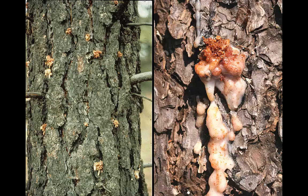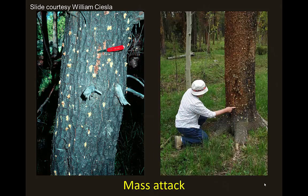Ultimately, enough beetles means the tree loses — the beetles win. Pitch-outs are what we see, and if enough attacks occur they will overcome the tree defenses through this mass attack. You either see a whole lot of beetles or none on a single tree. The pitch tubes will be the external evidence that they have been attempting, and often successfully, attacking the tree.